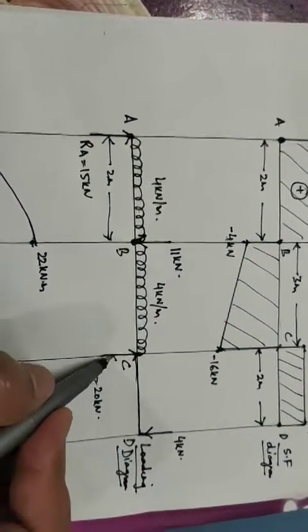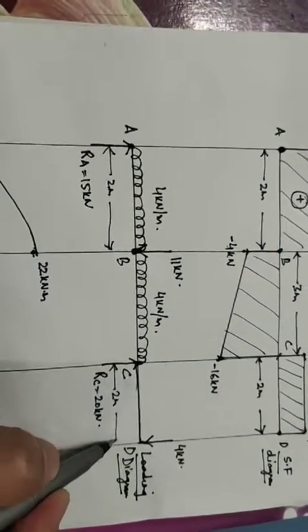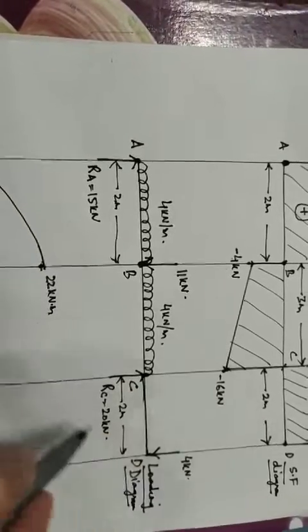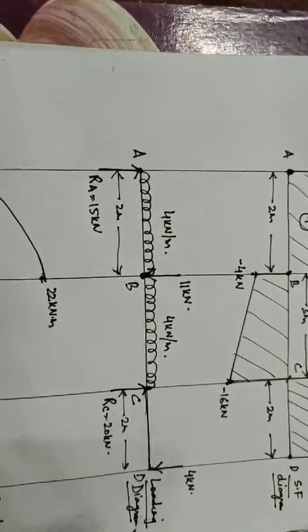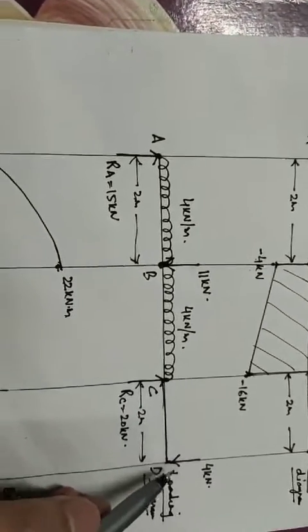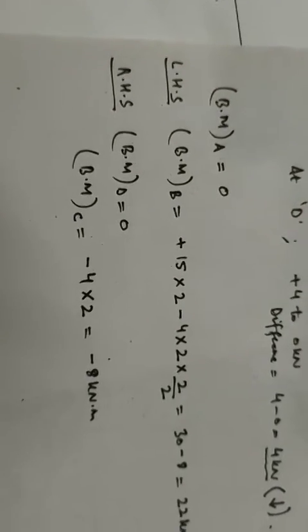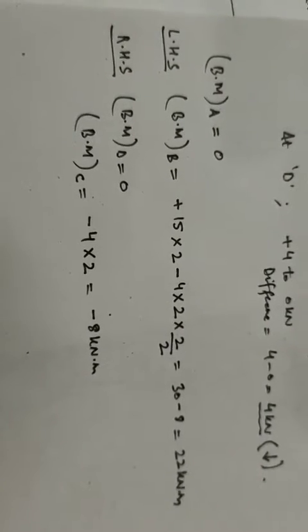Bending moment at C equals 4 into 2 meters, and the direction is clockwise, which is negative. So bending moment at point C is minus 8 kilo Newton meter. These are the bending moment calculations at various points.